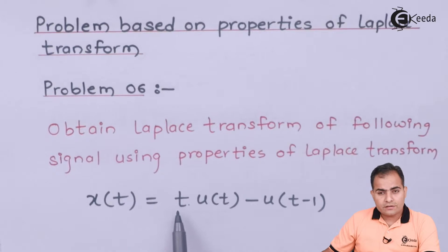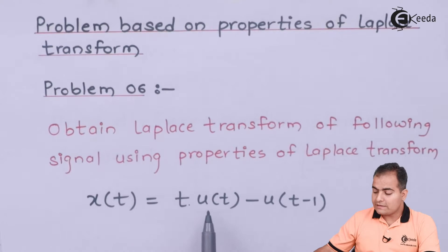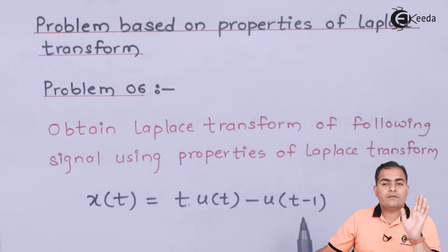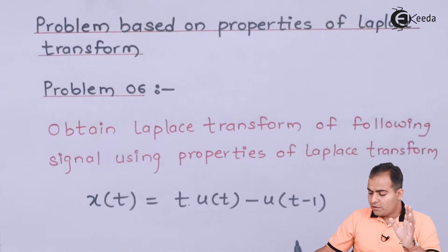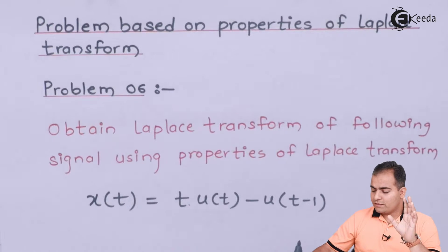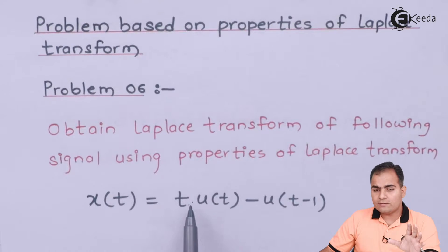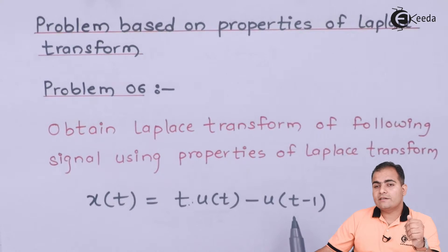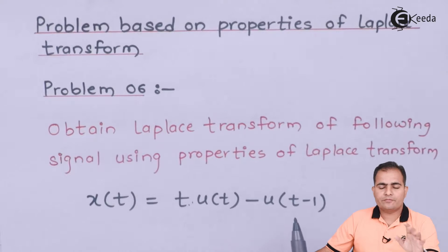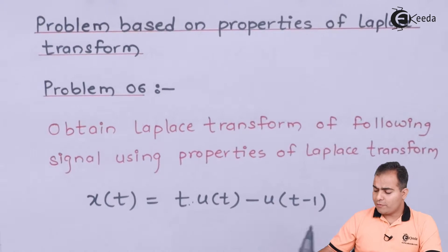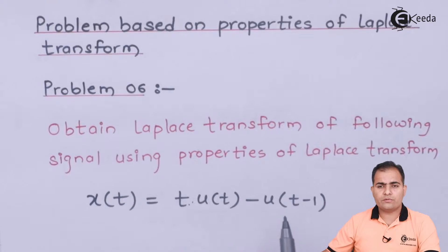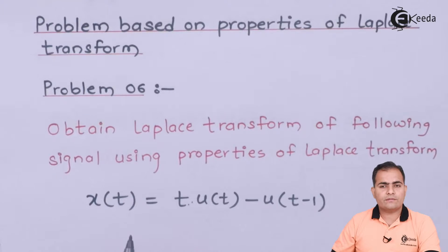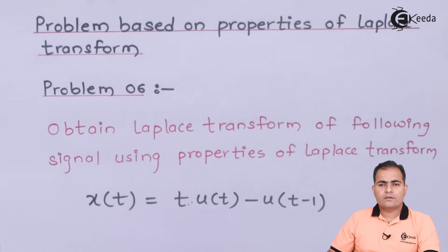This is a differentiation property because t is multiplied with u(t). In the second part, we have u(t-1), which means I am going to use a time shifting property — that is simple. You can directly get the idea just after looking at the question. If t is multiplied, then we will use a frequency differentiation property, and if the time is delayed, we use a time shifting property. I am going to separate this function as x1(t) and x2(t), solve them individually, and then substitute both values into x(s).